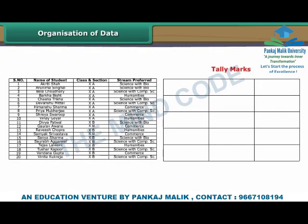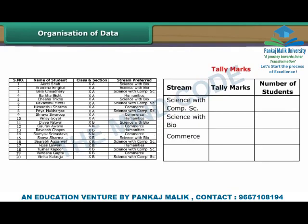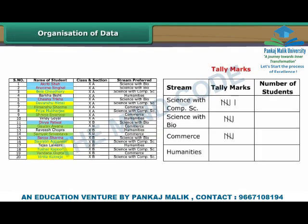Consider the data collected by Sheetal on the stream preferences of class 10 students. Make three columns: streams, tally marks, and number of students. Specify all available streams under streams one by one. Under tally marks, denote a student with a preference for a particular stream by a tally mark against that stream. Indicate every fifth student preferring a particular stream by a slanting line crossing the previous four tally marks. Now count the tally marks against every stream and record it under number of students.